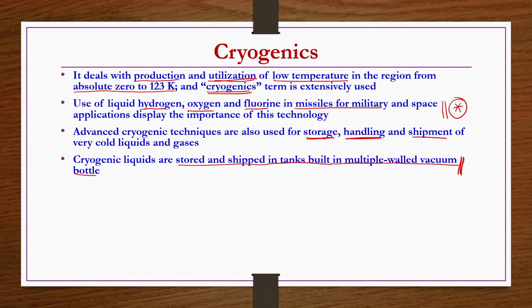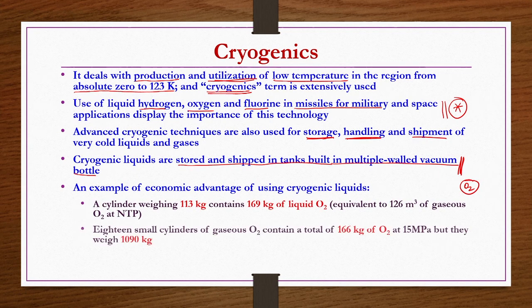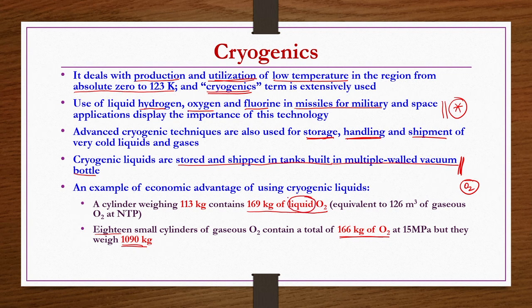For example, if you wanted to store 166 kg of gaseous oxygen at 15 megapascals, you need 18 small cylinders weighing approximately 1090 kg. But approximately the same amount — 169 kg of liquid O2 — requires a cylinder weighing only 113 kg. This means storing the same weight of oxygen as gas requires vessels weighing almost 10 times more compared to storing it as liquid oxygen. This illustrates how important cryogenics is from an economics point of view.